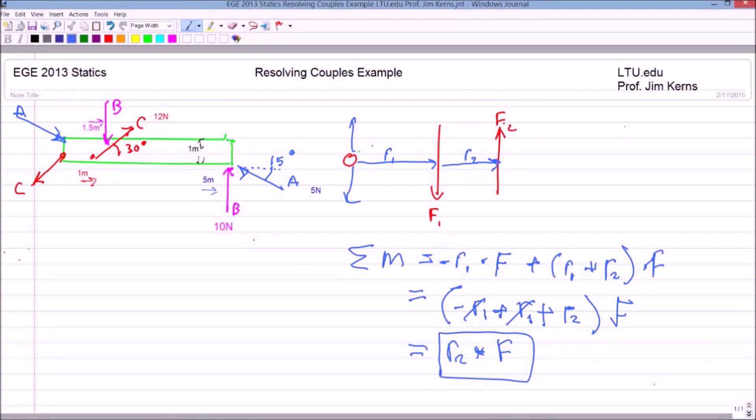So that's why it's a free vector, because I can move the point at which that couple is applied anywhere on the page up, down, right, left. So I hope that clears up any confusion about why we consider a couple to be a free vector that you can apply anywhere.